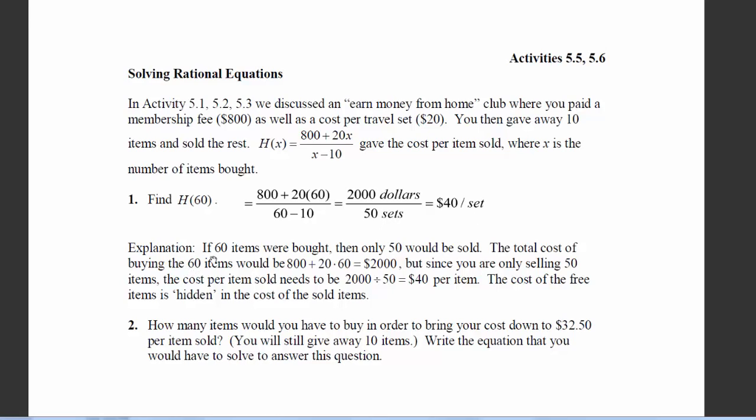And we're given a little explanation down here. If 60 items were bought, that means we sold 50 because we gave 10 away. And the average cost per set comes out to $40 per set or per item.